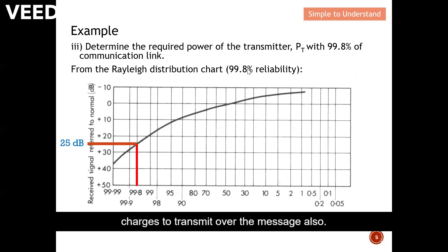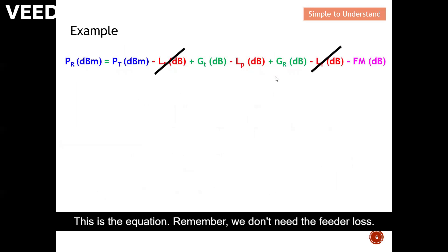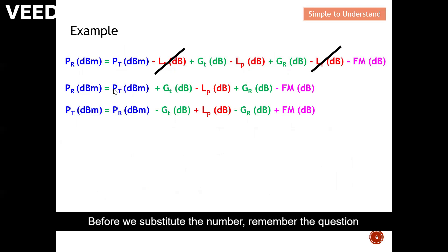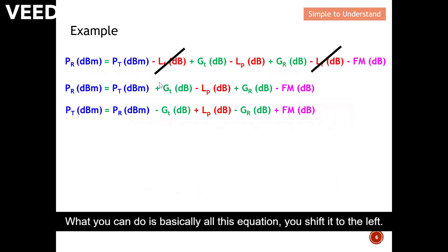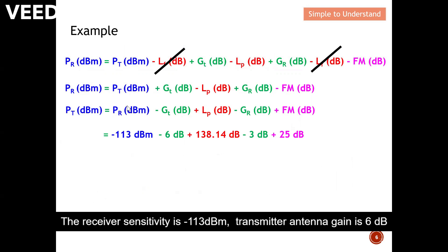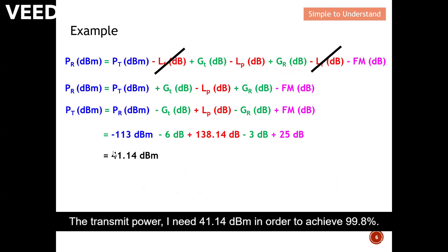Since we don't need feeder loss, we write the simplified equation and substitute the values, shifting transmit power to the left-hand side. Substituting: receiver sensitivity minus 113 dBm, transmitter antenna gain 6 dB, path loss 138.14 dB, receiver antenna gain 3 dB, and fade margin 25 dB. The required transmit power is 41.14 dBm.